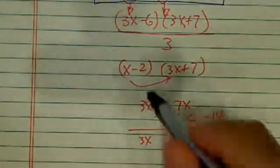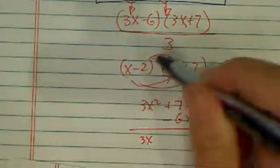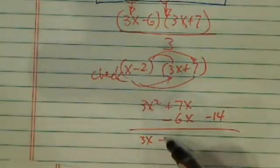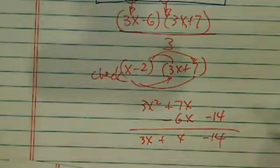I did the FOIL method over here, and to check the answer, I'm going to write a check. 3x squared plus x minus 14. This is where we started.